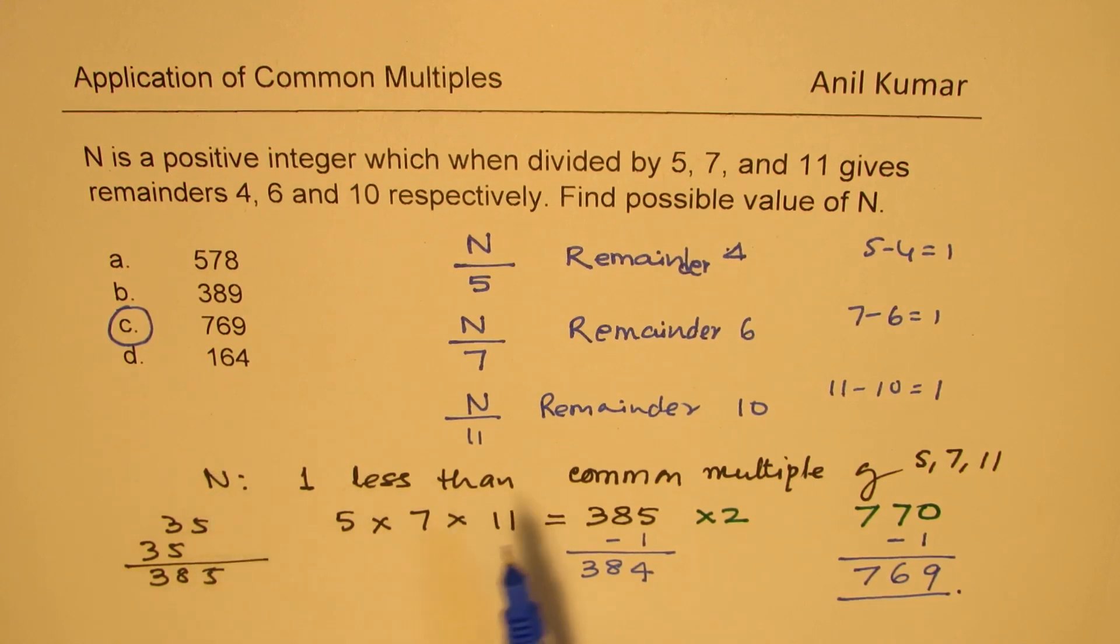Then in that case, you have to find the common multiple and then less 1 will give you the answer as we did in this particular solution. So I hope you understand this technique.